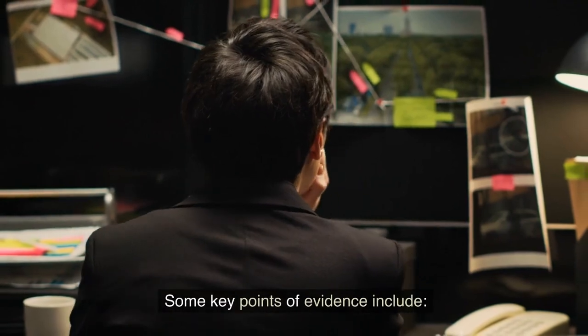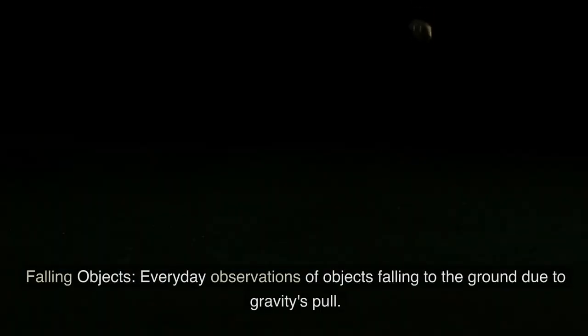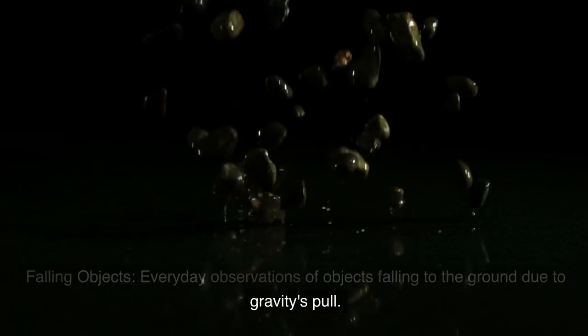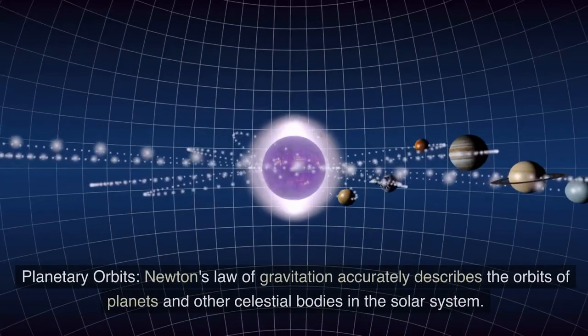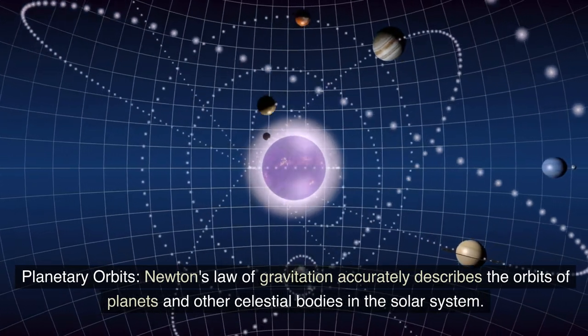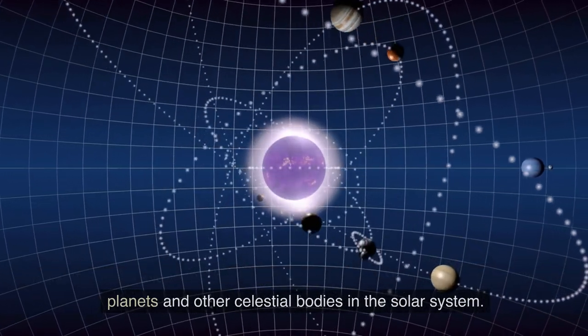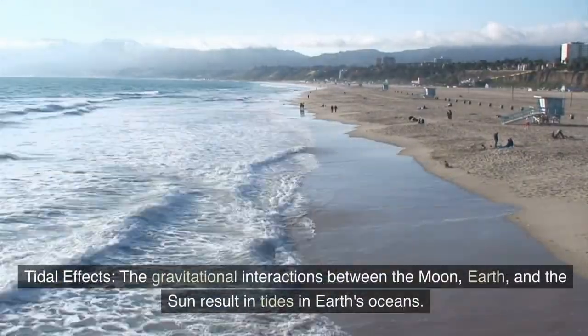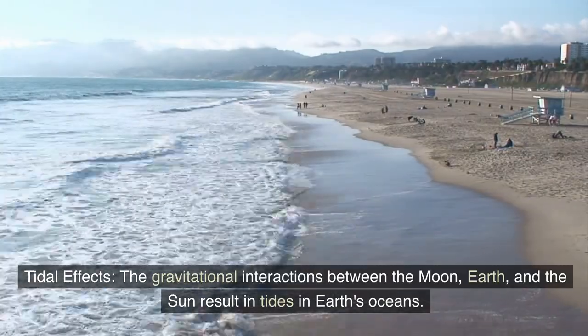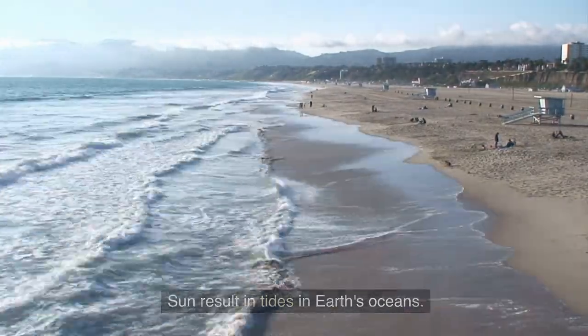Some key points of evidence include: falling objects, everyday observations of objects falling to the ground due to gravity's pull; planetary orbits, Newton's Law of Gravitation accurately describes the orbits of planets and other celestial bodies in the solar system; tidal effects, the gravitational interactions between the Moon, Earth, and the Sun result in tides in Earth's oceans.